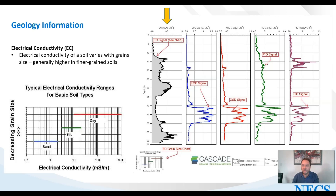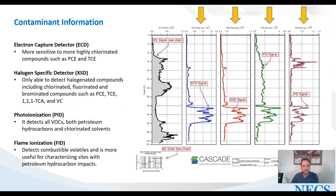The MIP-HPT provides three main types of formation information. One is about geology — the electrical conductivity sensor at the bottom of the probe gives a response that lets you estimate the type of soil, whether it's sand, silt, or clay. A high response indicates fine-grained soils like clay, while lower responses indicate more sandy soils.